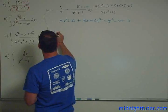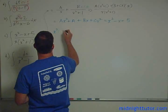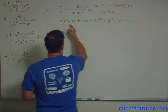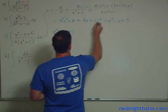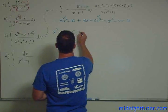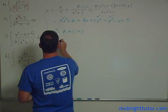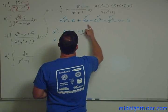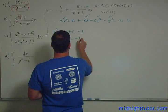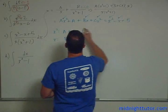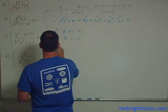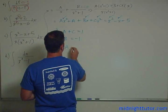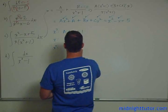So we can take the x squared terms. So we have A plus C equals 1, the x terms, B equals minus 1, and then A equals 5.